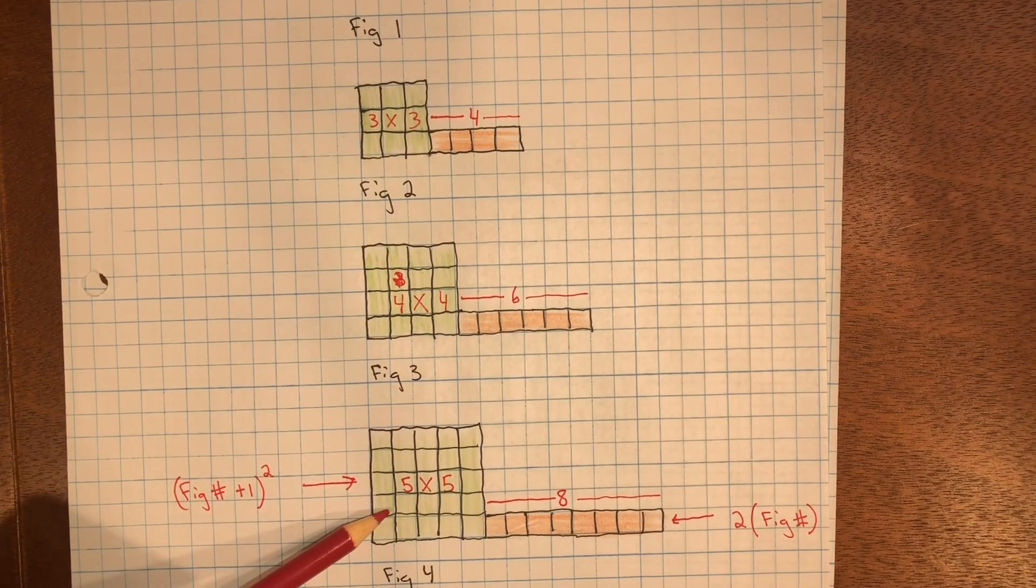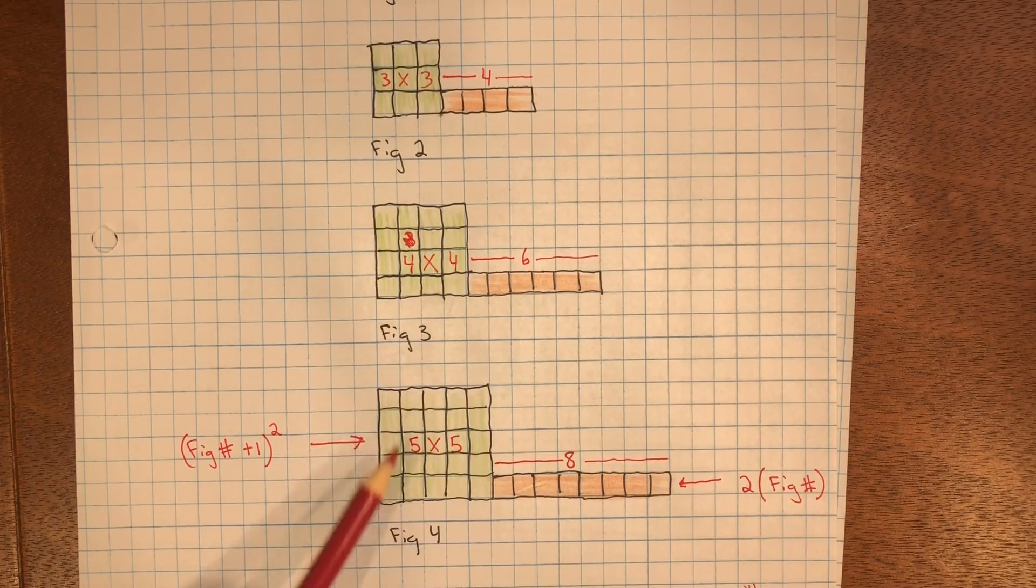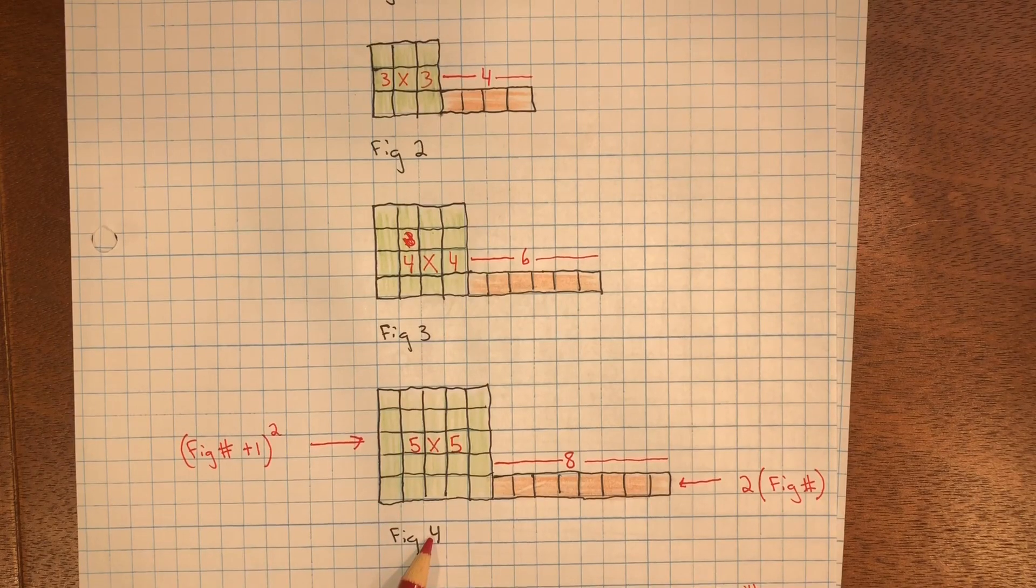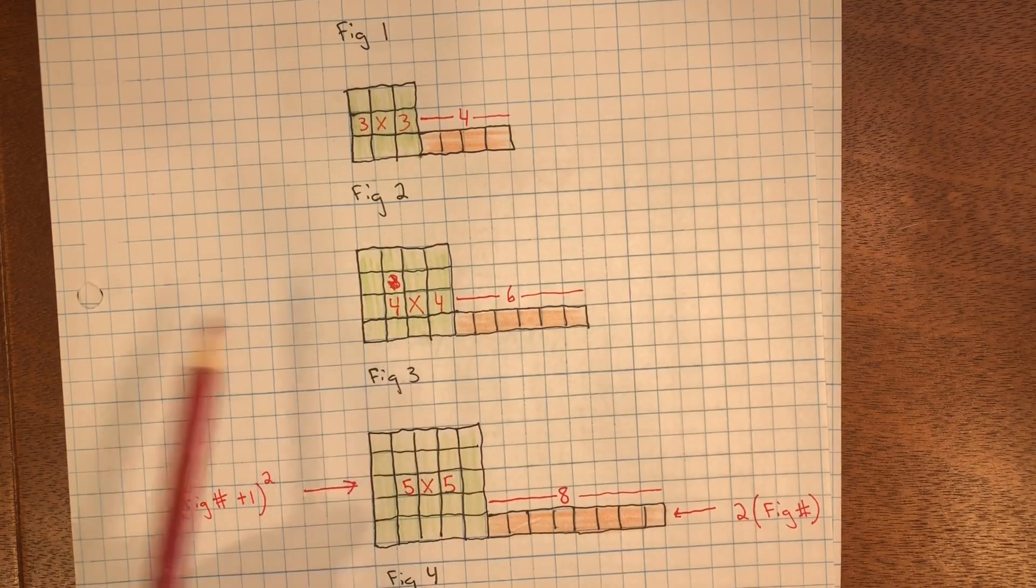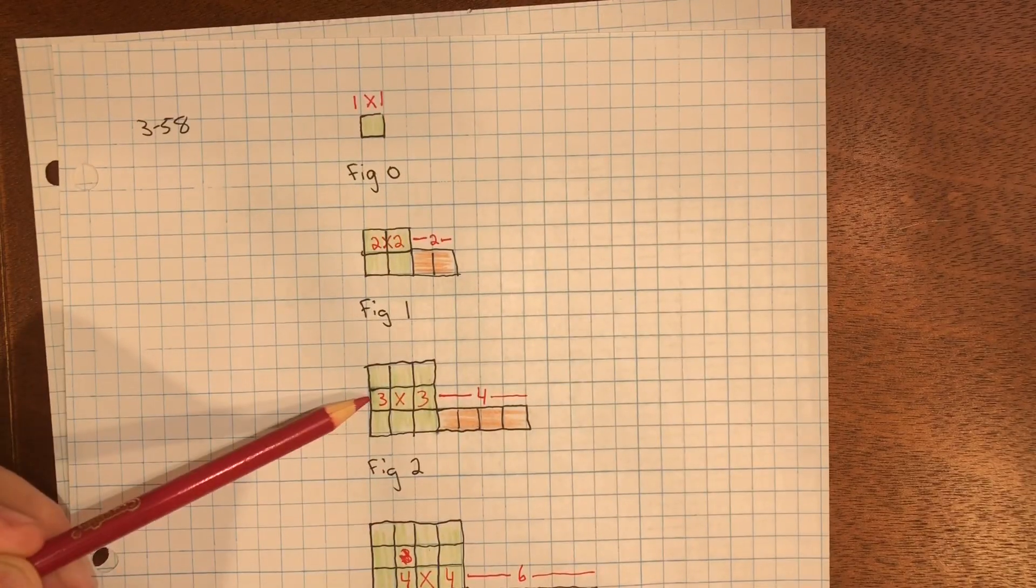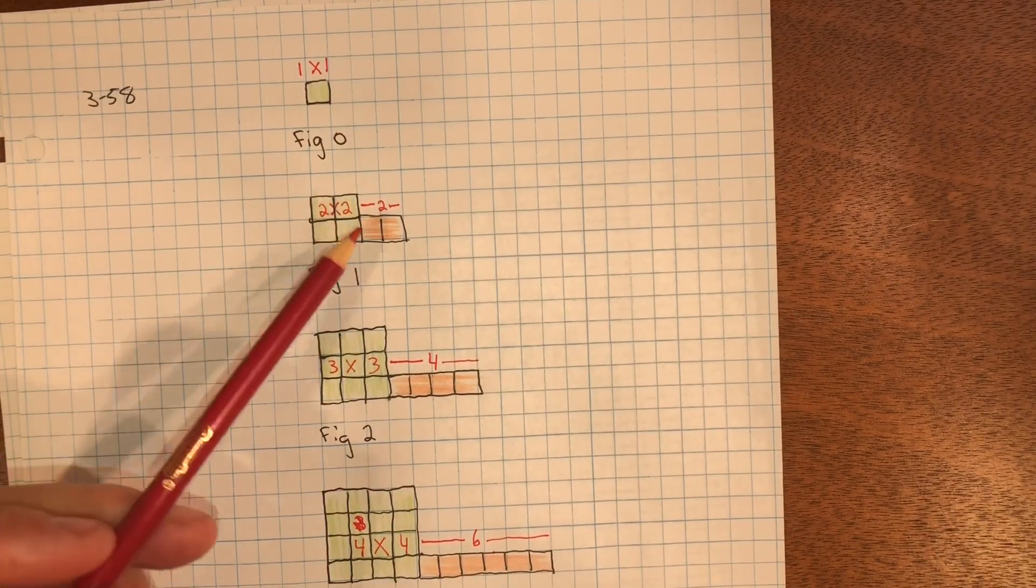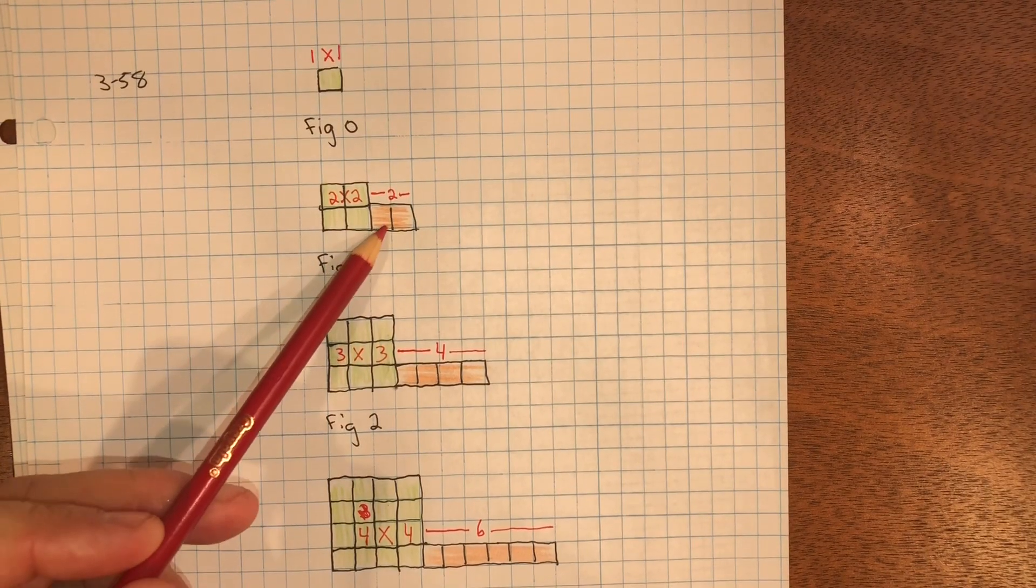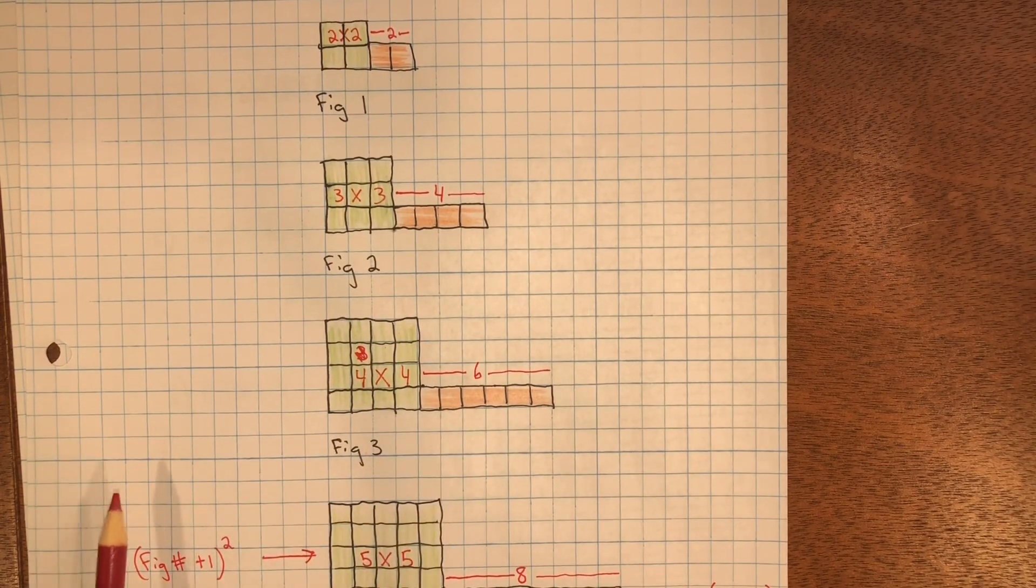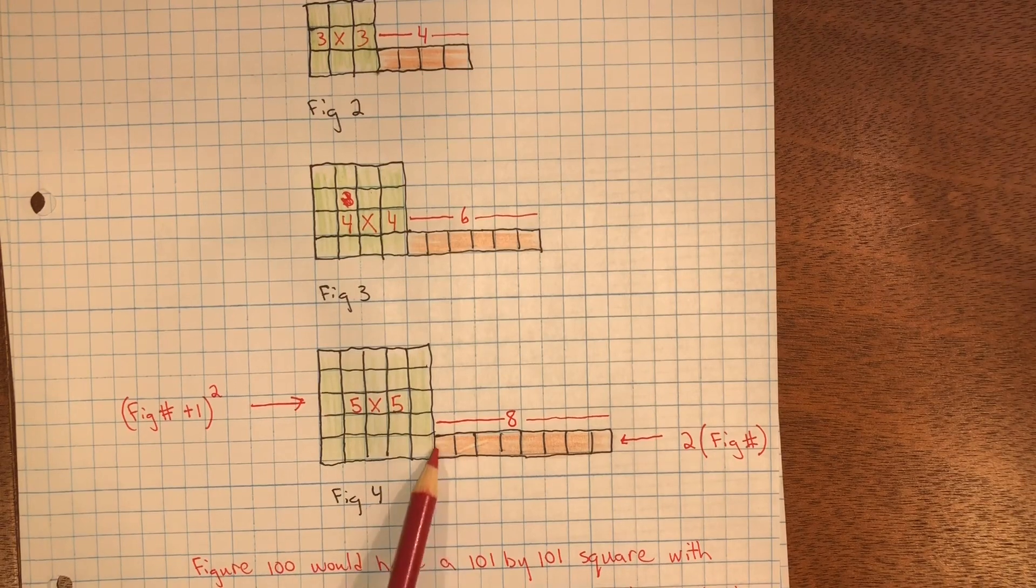So you can see the pattern: 4 by 4, next would be a 5 by 5. And I noticed that this green square is just the figure number plus 1. So figure number is 4, this is a 5 by 5. Figure 3 is a 4 by 4. And if I look at the horizontal part coming off the bottom right, figure 1 has 2, figure 2 has 4, figure 3 has 6. So I notice that it's twice as many as the figure number. So figure 4 has 8.